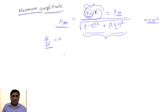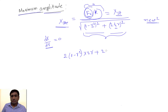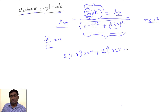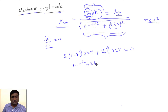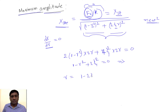Differentiating, the only differentiable quantity is the denominator inside the square root. The differentiation gives: 2·(1 − r²)·(2r) plus 4ξ²·(2r) equal to zero. Simplifying this, it becomes (1 − r²) + 2ξ² equal to zero, which gives r² equal to 1 − 2ξ².